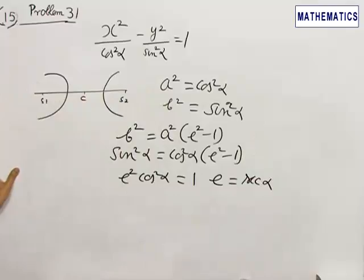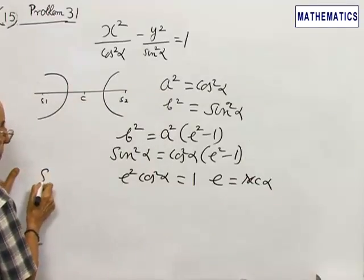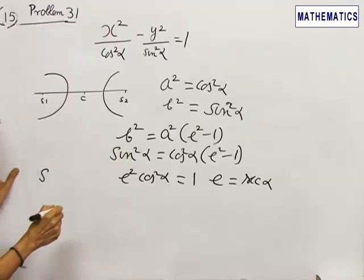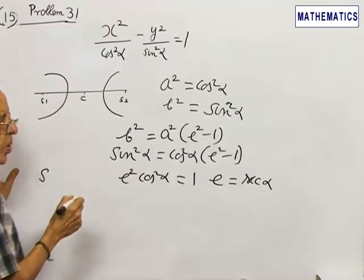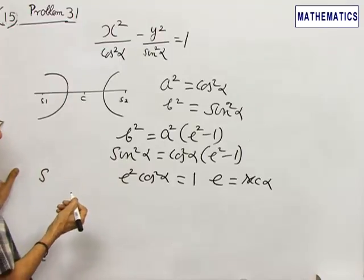Now you know that the coordinates of the foci are minus a e, 0 and plus a e, 0. There will be 2 foci.